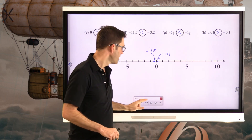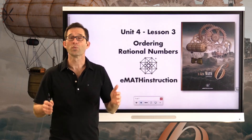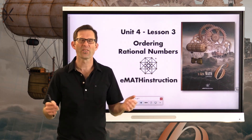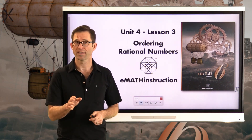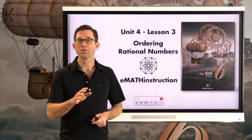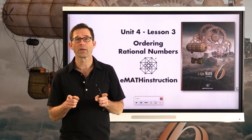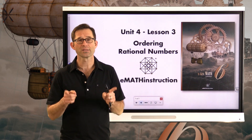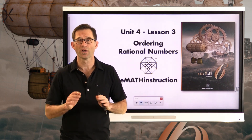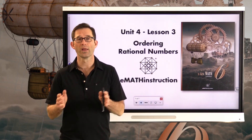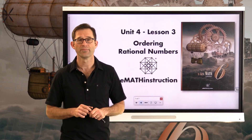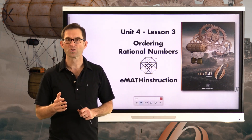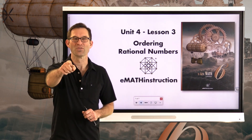Let's wrap this up. Primarily today we tried to order negative and positive numbers, which together are called the rational numbers. We ordered them using a simple principle: when two numbers are plotted on a number line, the one to the right is greater than the other — whether both are positive, both negative, or one of each. You can always judge greater than or less than based on relative positions on a number line. Thank you for joining me for another NGen Math 6 lesson by eMath Instruction. My name is Kirk Weiler — until next time, keep thinking and keep solving problems.